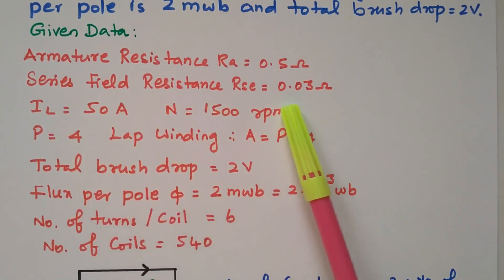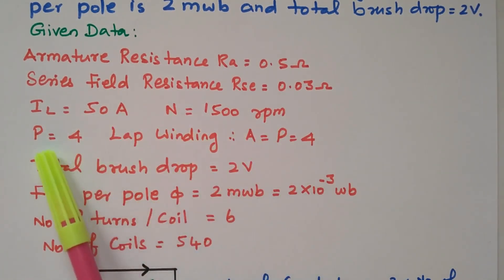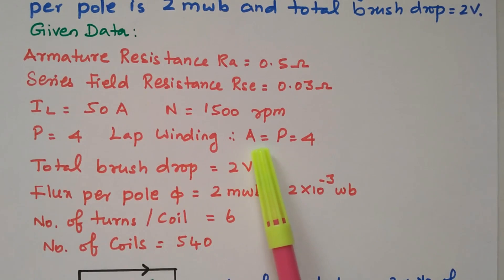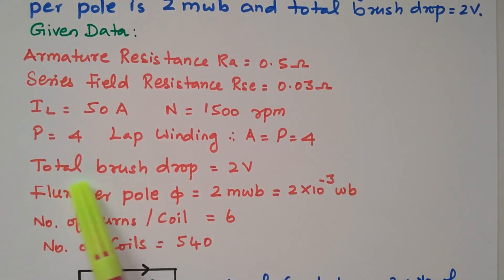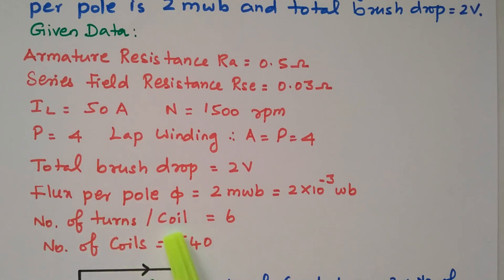Series field resistance RSC is 0.03 ohm. Load current is 50 amperes. Speed is 1500 rpm. Number of poles = 4. For lap winding, number of parallel paths A equals number of poles = 4. Total brush drop is 2 volts. Flux per pole is 2 milliwebers = 2 × 10⁻³ Wb. Number of turns per coil is 6, total number of coils is 540. Our aim is to find the terminal voltage at the load.